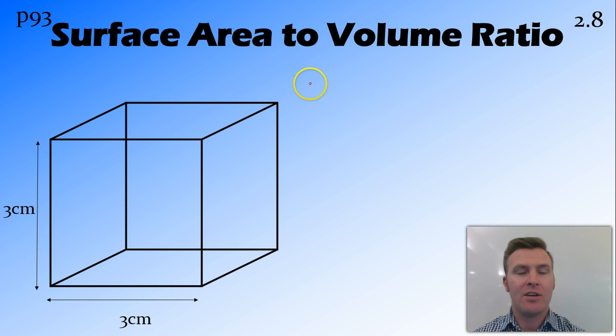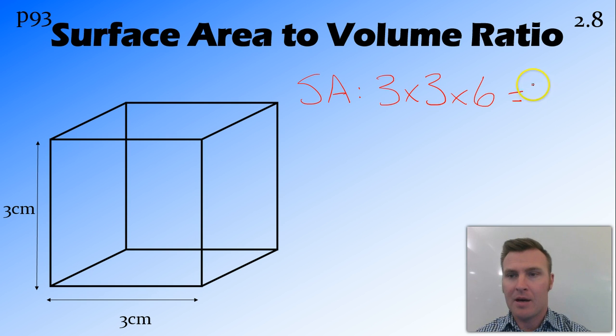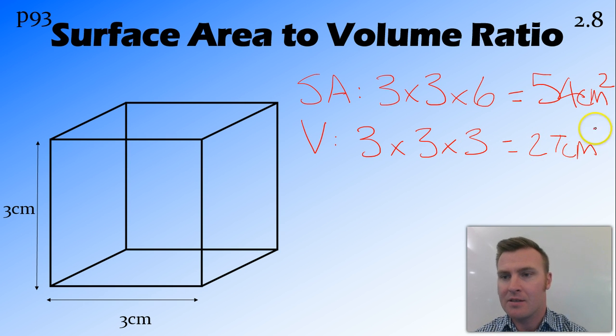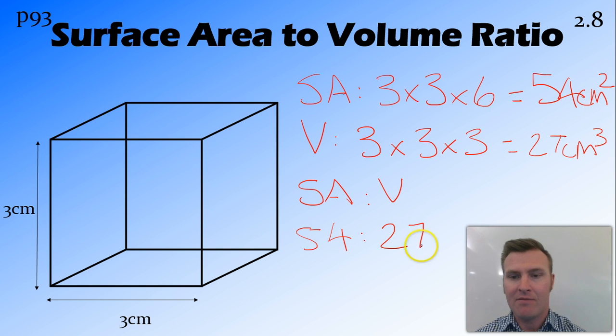Last one. We have a cube that is 3cm in size. So surface area is going to be 3 by 3 by 6—you should be seeing a pattern here—that makes 54cm squared. Our volume is going to be 3 by 3 by 3, giving us 27cm cubed. So our surface area to volume ratio of this cube is going to be 54 to 27, or 2 to 1. So there's our 3 cubes, how to work out surface area, how to work out volume, and how to put that into a surface area to volume ratio.